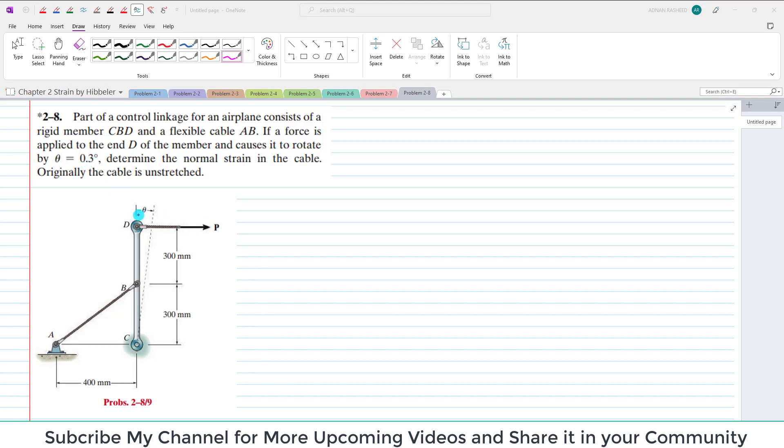If P is applied, this D moves or rotates at an angle of 0.3 degrees. Determine the normal strain in the cable. Originally the cable is unstretched. So what we have to find is the strain in cable AB.